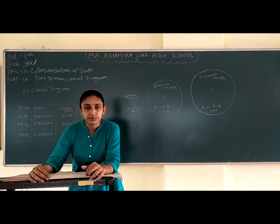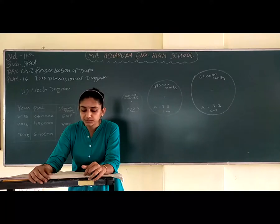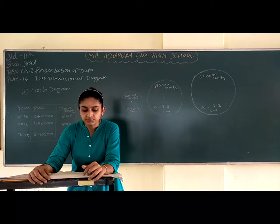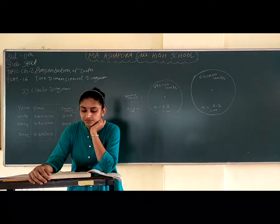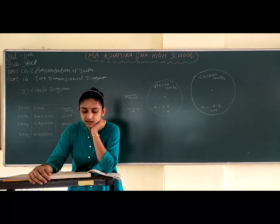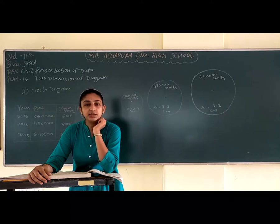Here, pi is equal to 3.14 or 22 by 7, and r is equal to the radius. The area of a circle is proportional to the square of its radius. Therefore, in a circle diagram, the square roots of the volume of different data are taken as the radius of the circle. The radii obtained are arranged in ascending or descending order and are drawn with centers on the same line at equal distance from each other. If the radius of the circle is given with respect to time, then circles are drawn in order of time only.